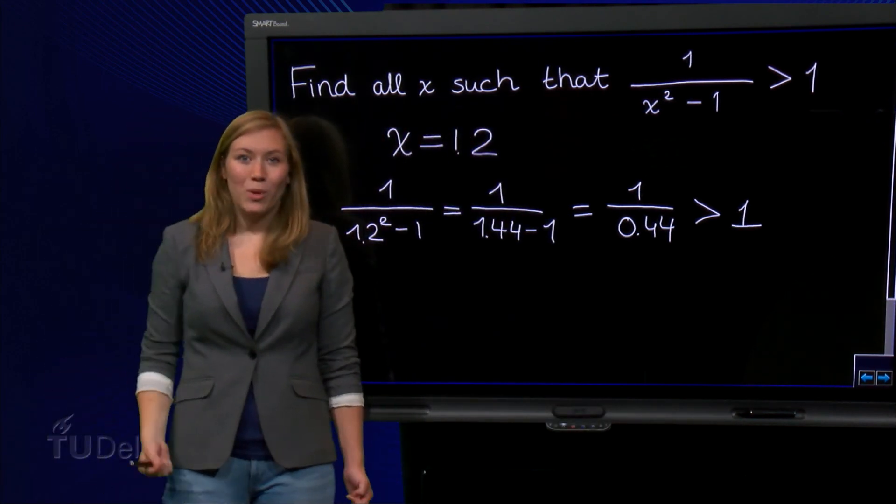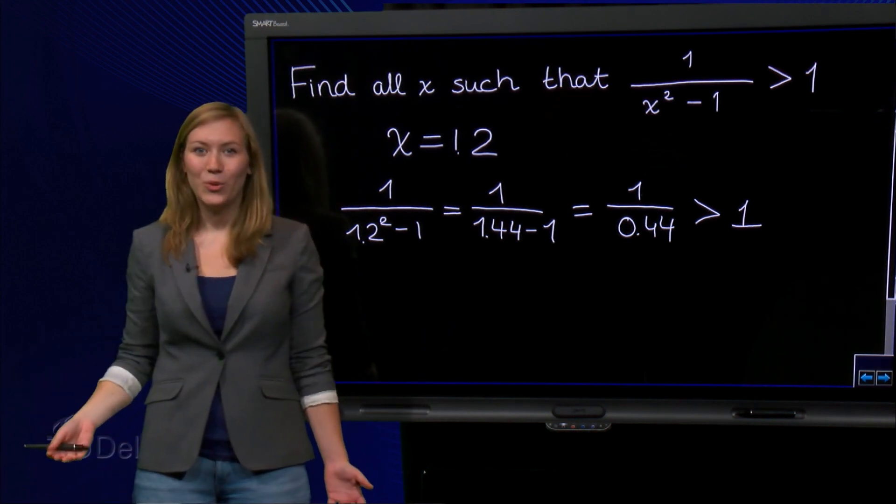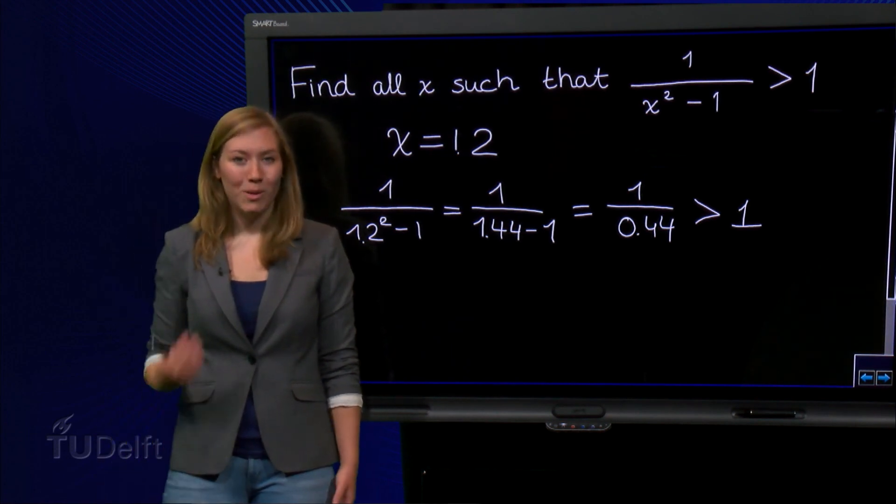So you see that at x is 1.2, the left hand side is larger than 1. Thus, x is equal to 1.2 is the solution, but somehow we missed it. What mistake did I make?